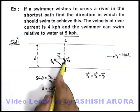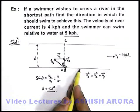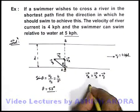So he should swim in the direction at an angle 90 plus 53, that is 143 degrees from the direction of river current, and the resulting velocity v_r,